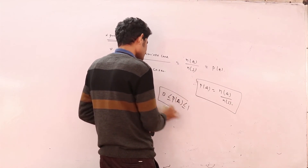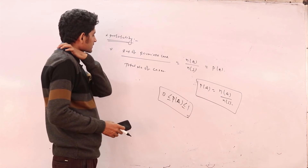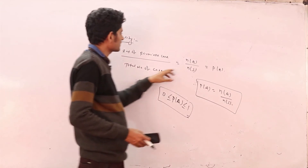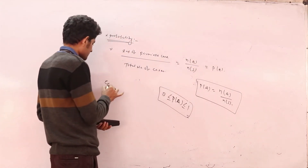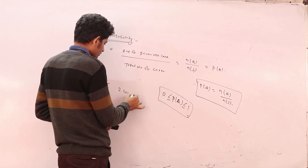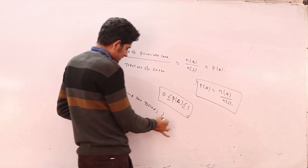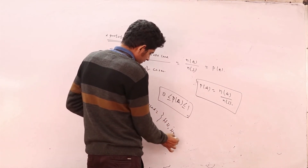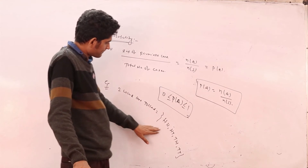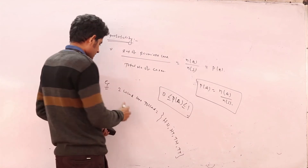Probability always ranges from 0 to 1 — the meaning of 0 and 1 we will discuss later. For example, suppose two coins are tossed. The sample space will be: HH, HT, TH, TT.